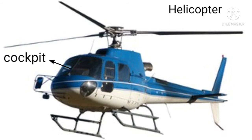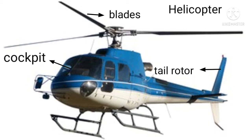The helicopter has blades that spin around, and this part is called the tail rotor, which is used to turn the helicopter. Uses of helicopter: number one, a helicopter is very useful because it can fly almost anywhere; number two, it is used to rescue people from any kind of disaster; number three, it can even land in a very small place.